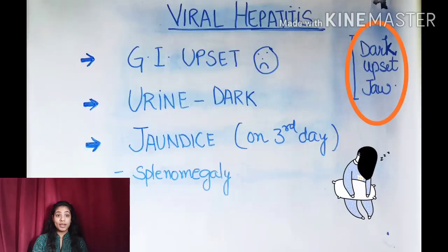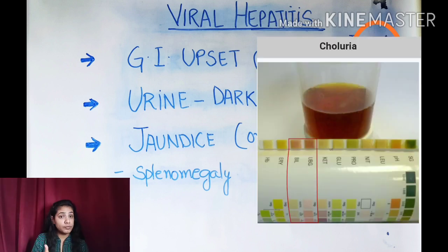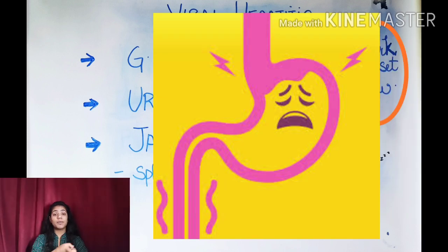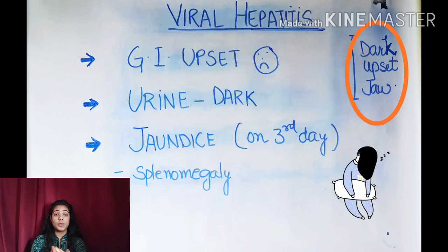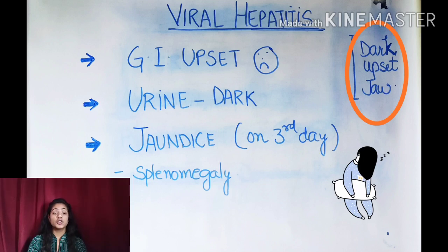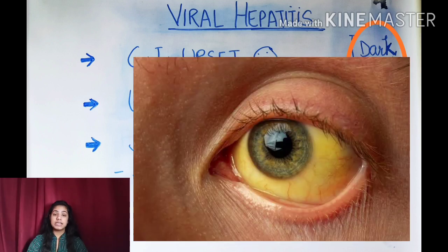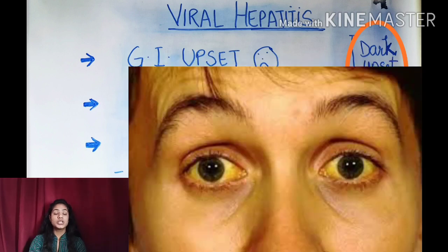Now let's start with the differential diagnosis of hepatomegaly with some other diseases. When we are differentiating viral hepatitis from hepatomegaly, we have to keep in mind the mnemonic DARK UPSET JAW. DARK indicates darker urine of the patient, UPSET indicates GI tract upset, because viral hepatitis and hepatomegaly are both related to abdominal disorders. On the third or fourth day of viral hepatitis, we will find jaundice in that patient — jaundice detected by serum bilirubin and serum biliverdin levels.